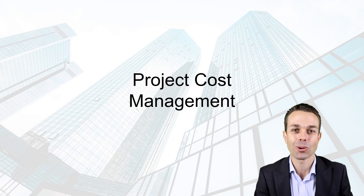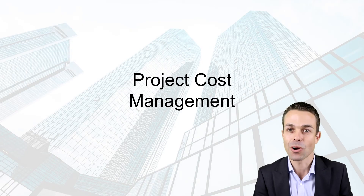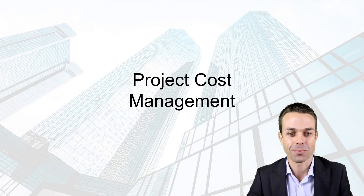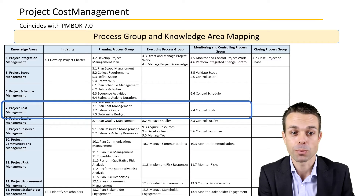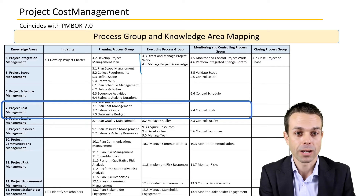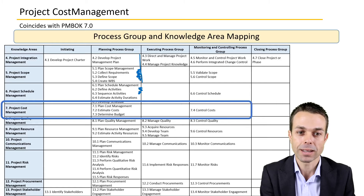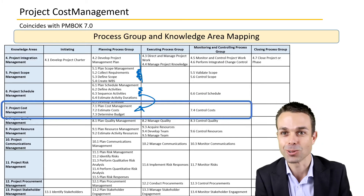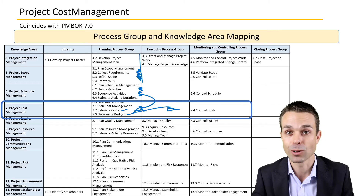Hi everyone, welcome back to the processes from the Project Management Body of Knowledge. This one in particular is the overview for project cost management. We've gone through the planning process group — we've planned the scope, what we're going to deliver, the schedule, when we're going to deliver it, and now looking at those two things we have a better idea of how much all of that is going to cost. So we're looking at estimating our costs, determining the budget, and then controlling those costs.